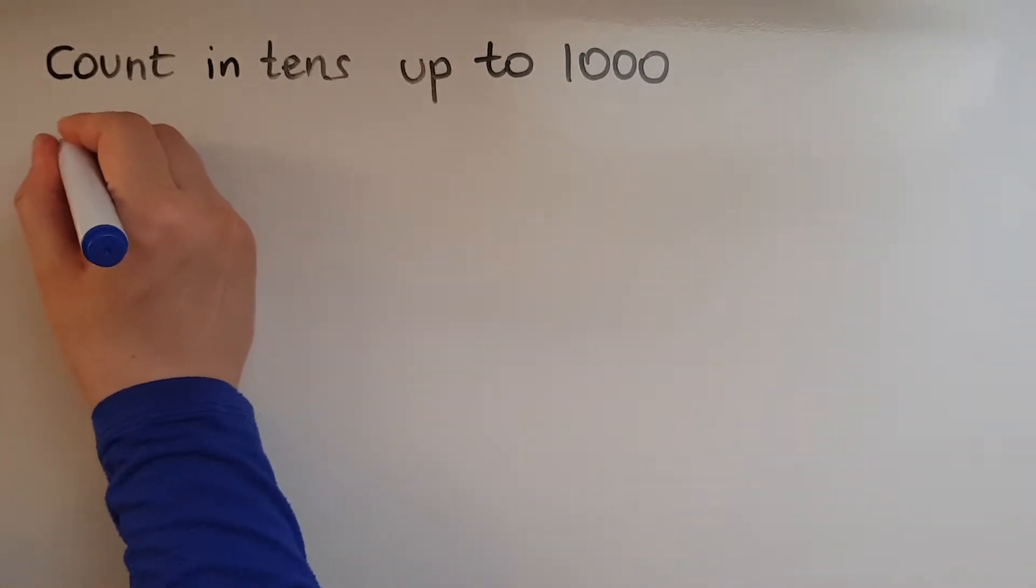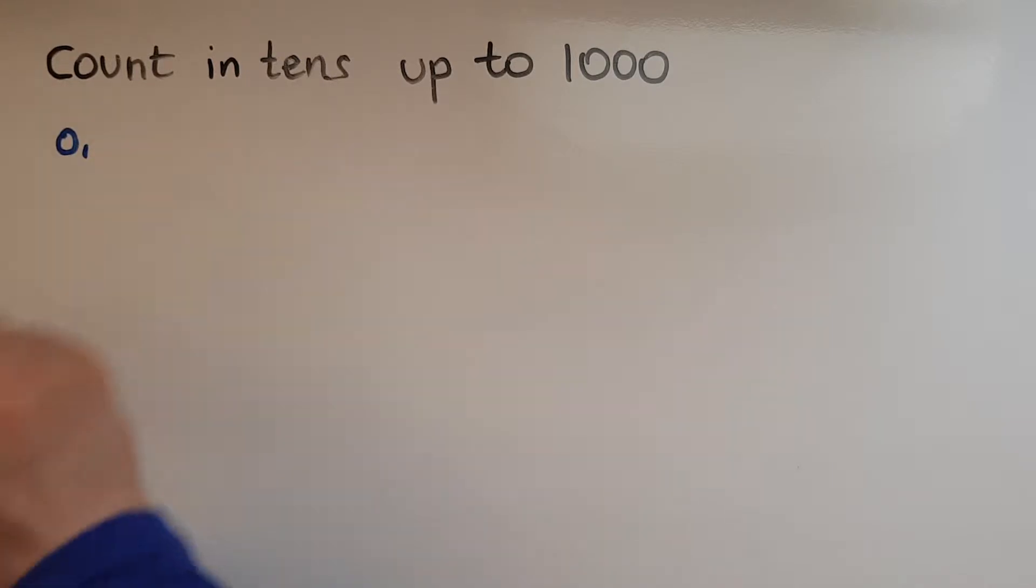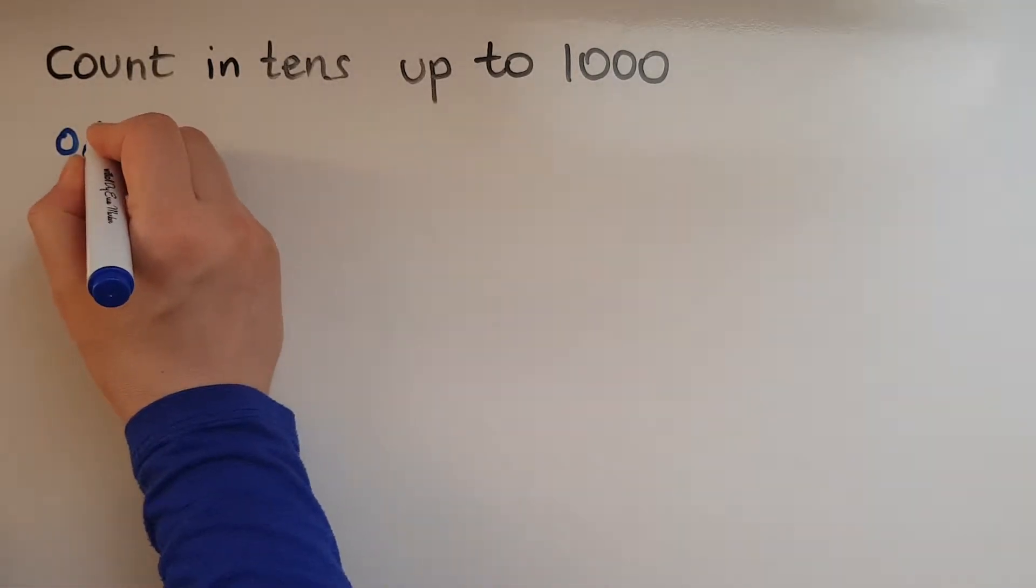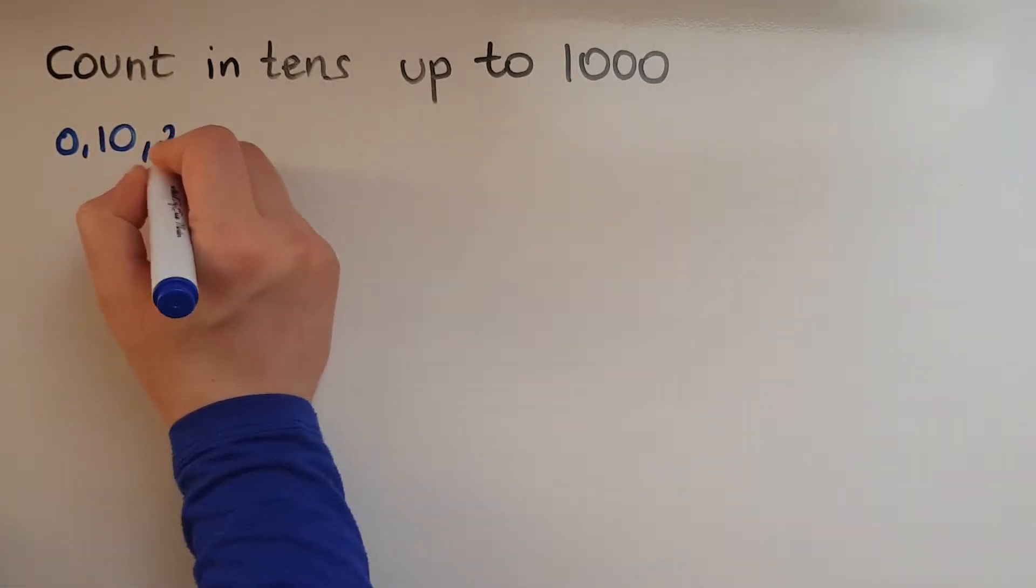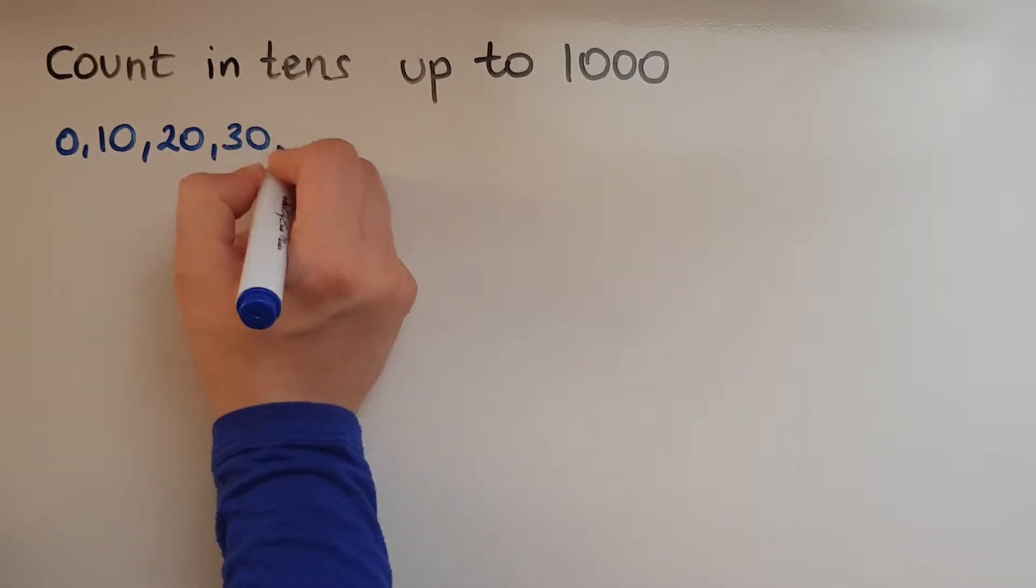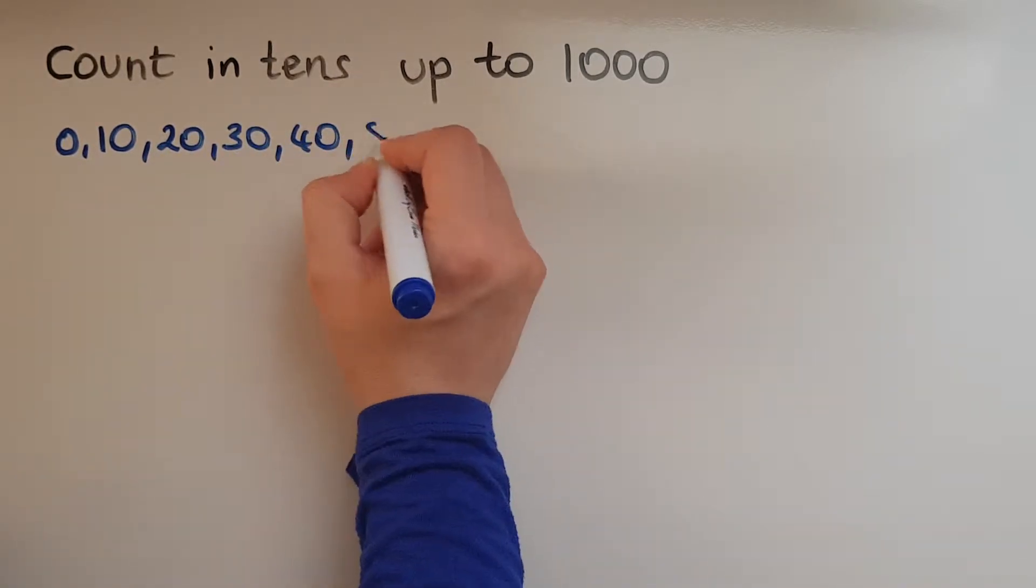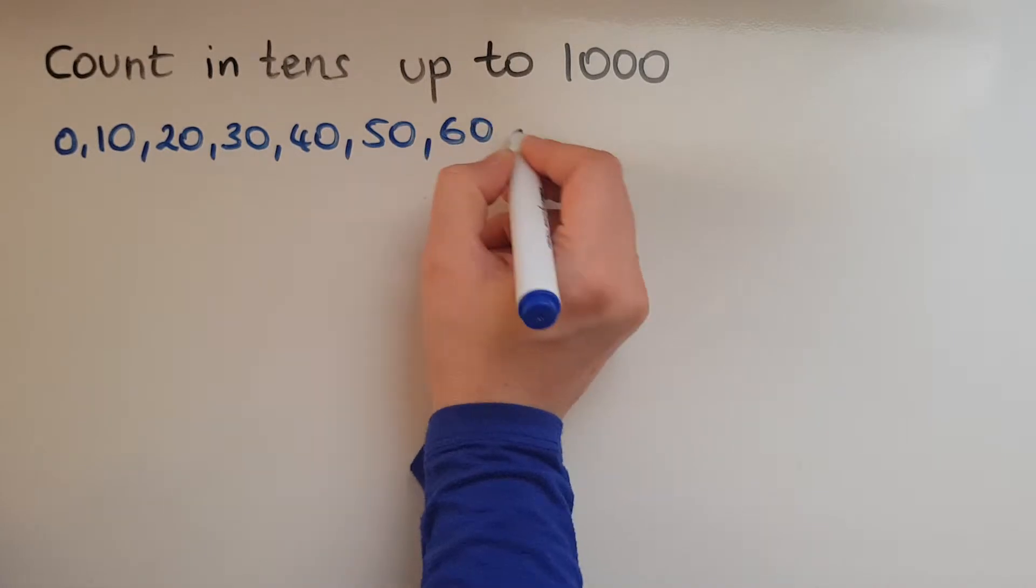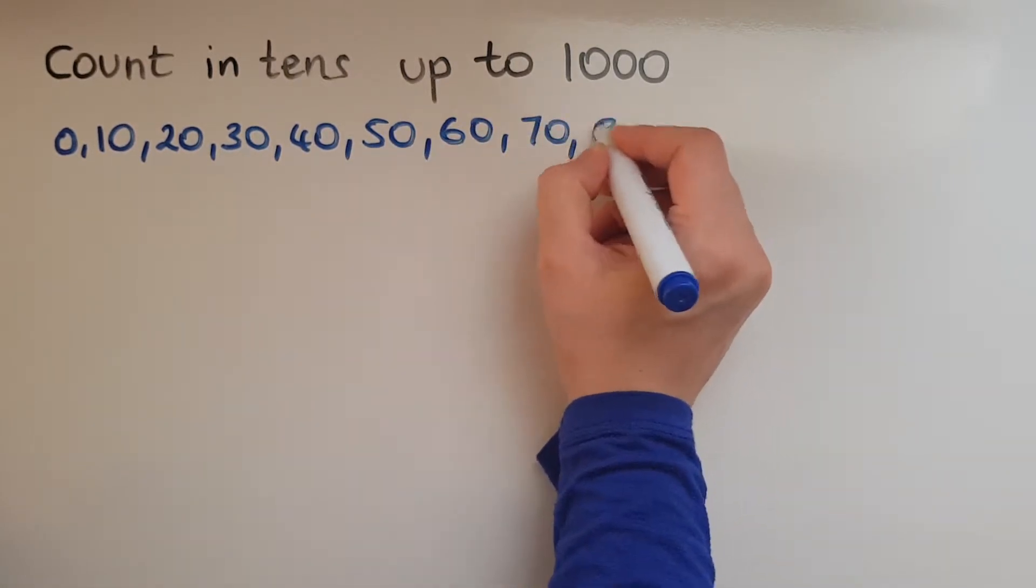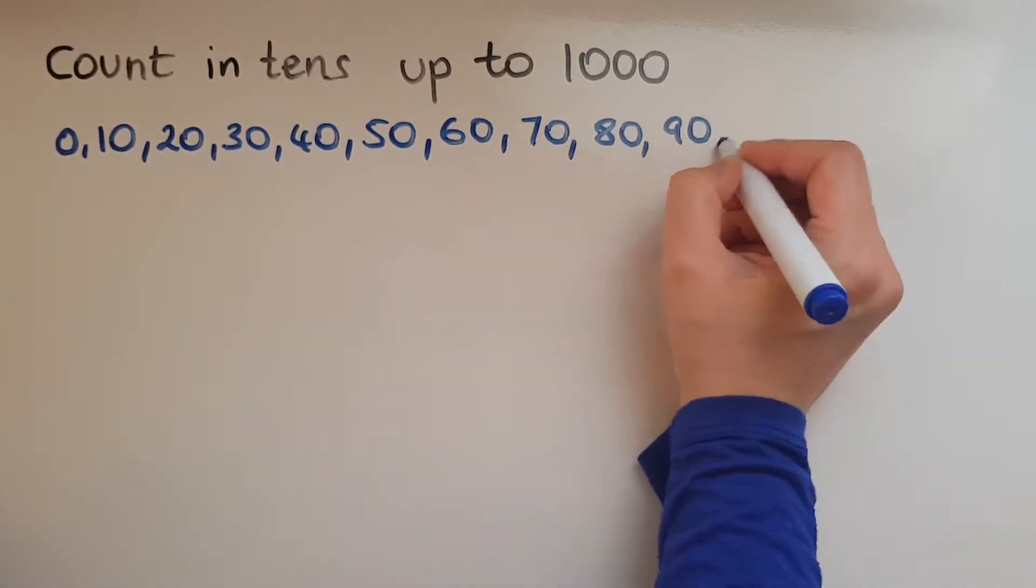So if we start with zero then we leave a gap of nine and then we move to ten. Then 20, 30, 40, 50, 60, 70, 80, 90, 100.